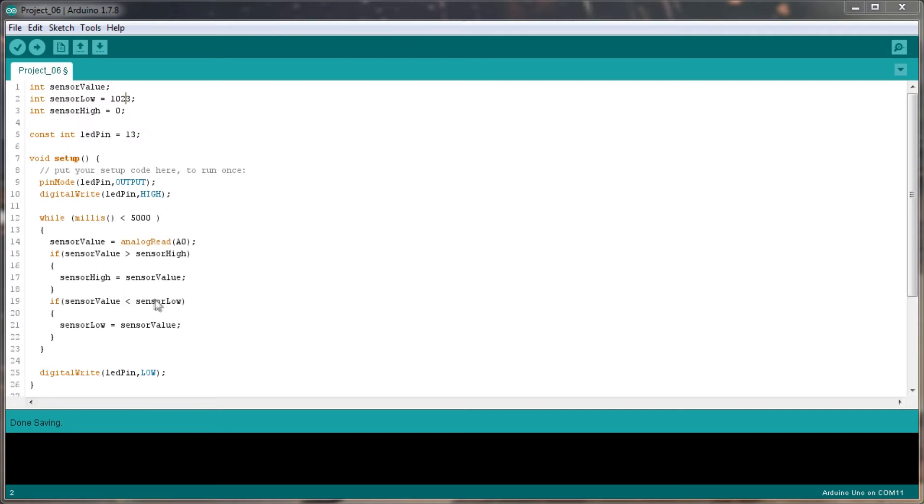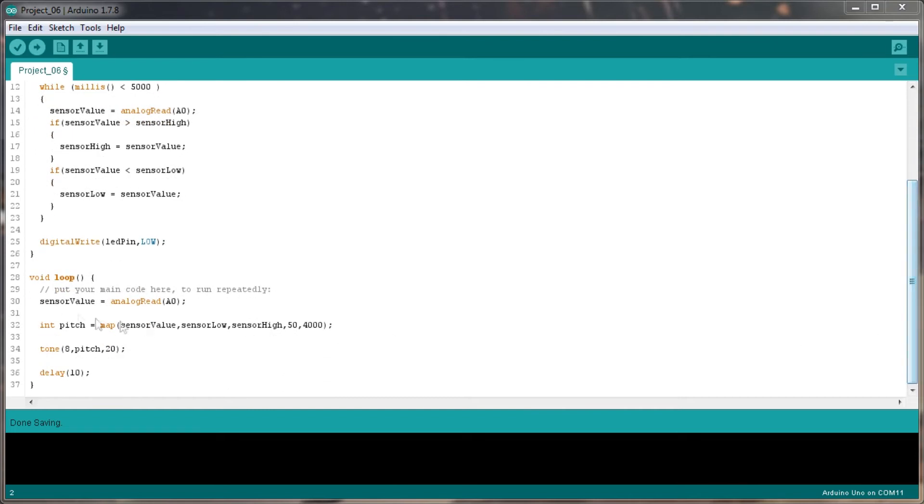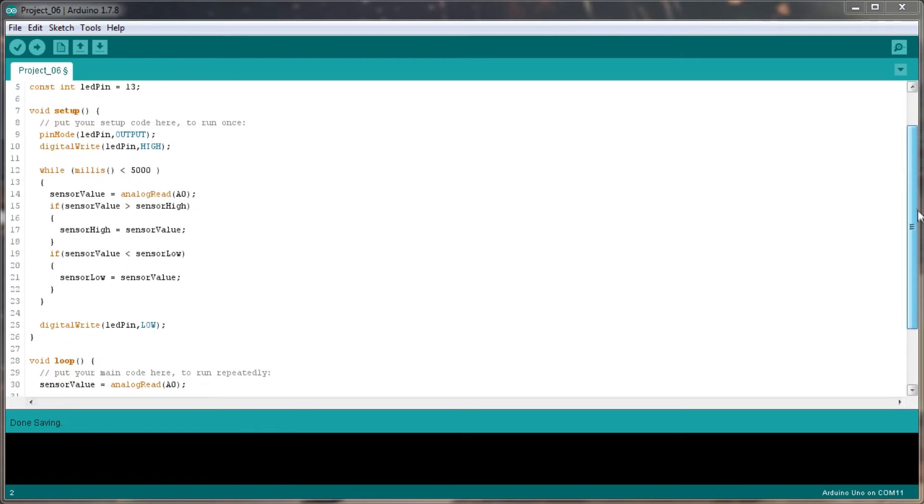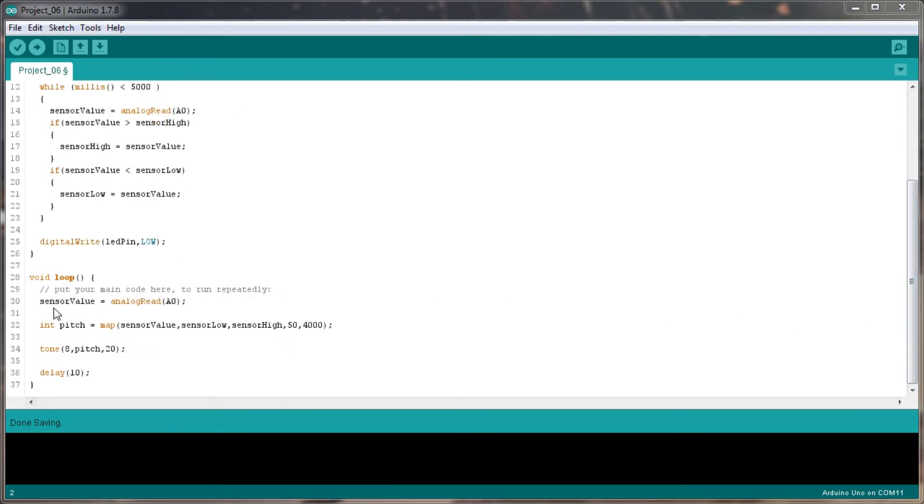If the sensor value is greater than whatever is too high, then the sensor high is going to be equal to the sensor value. If it's less than the sensor low, then the sensor low is going to be equal to the sensor value. And that's our setup. Then during our loop, we're also going to write out for the LED pin to low, so the LED pin is going to be switched off.